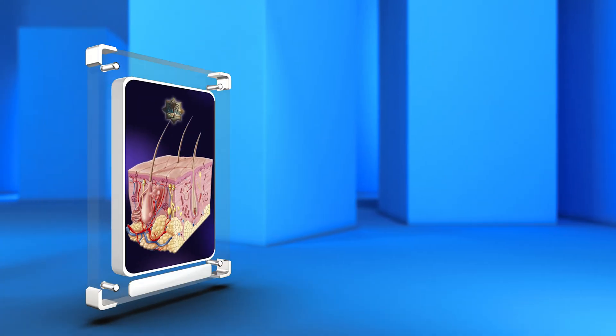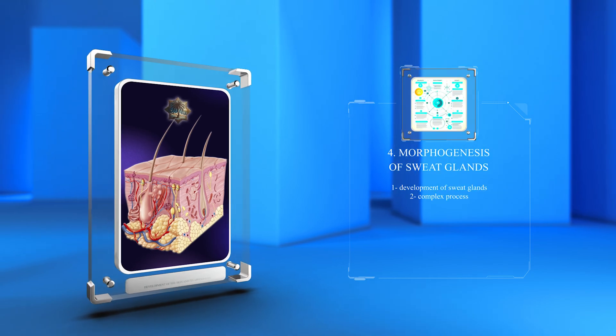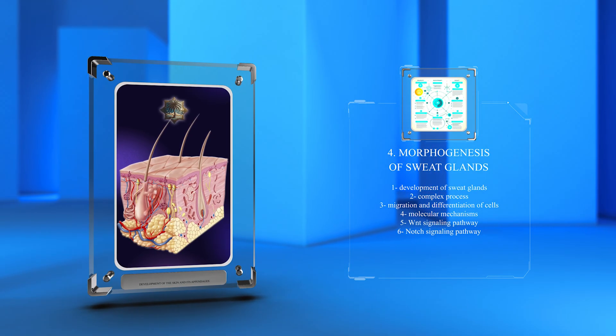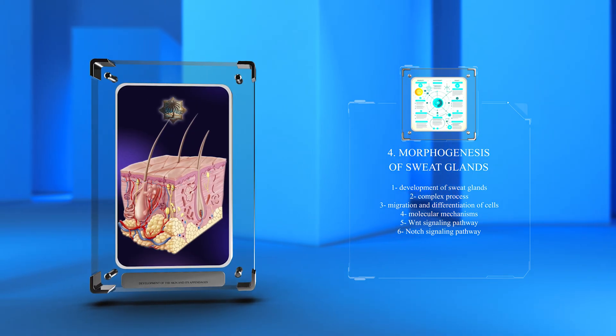The development of sweat glands is a complex process involving the migration and differentiation of specific cells. This is regulated by molecular mechanisms like WNT and Notch signaling pathways.